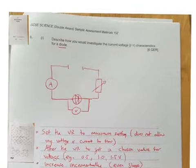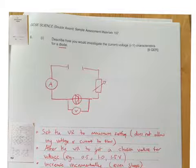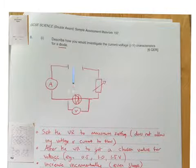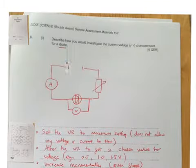Nice six mark question at the start: describe how you would investigate the current-voltage characteristics for a diode. First thing I'm going to do is give myself a bit of space and draw the circuit. That's a battery or cell, hopefully yours would be neater than mine. I've got my ammeter in series to measure the current, my variable resistor to change the resistance, my component which is a diode, and the voltmeter going across in parallel to the component to measure the voltage.